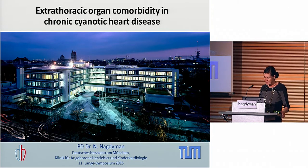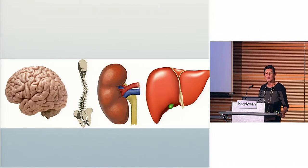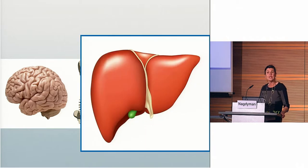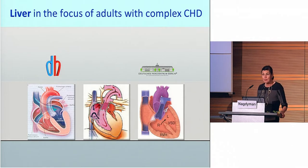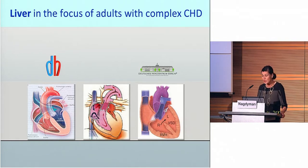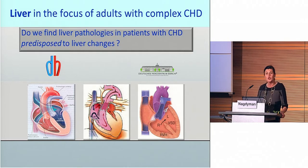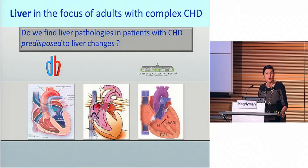I will switch a little bit to something else — totally different organs, nothing to do with the heart. In the next following minutes, I would like to focus on the liver. I would like to give you some data from a study we just performed together with Berlin and Munich, with data from three patient groups, with a central question: do we find liver pathologies in patients with congenital heart disease predisposed to liver changes?